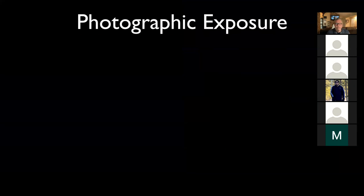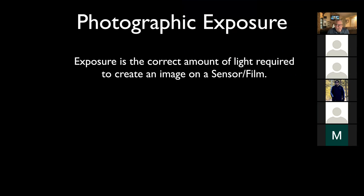We're going to talk about what's called photographic exposure - the basics of photography. The definition of photographic exposure is: exposure is the correct amount of light required to create an image on a sensor or film. Whether we're talking about digital cameras or regular film cameras, the correct amount of light has to come in to create that exposure.